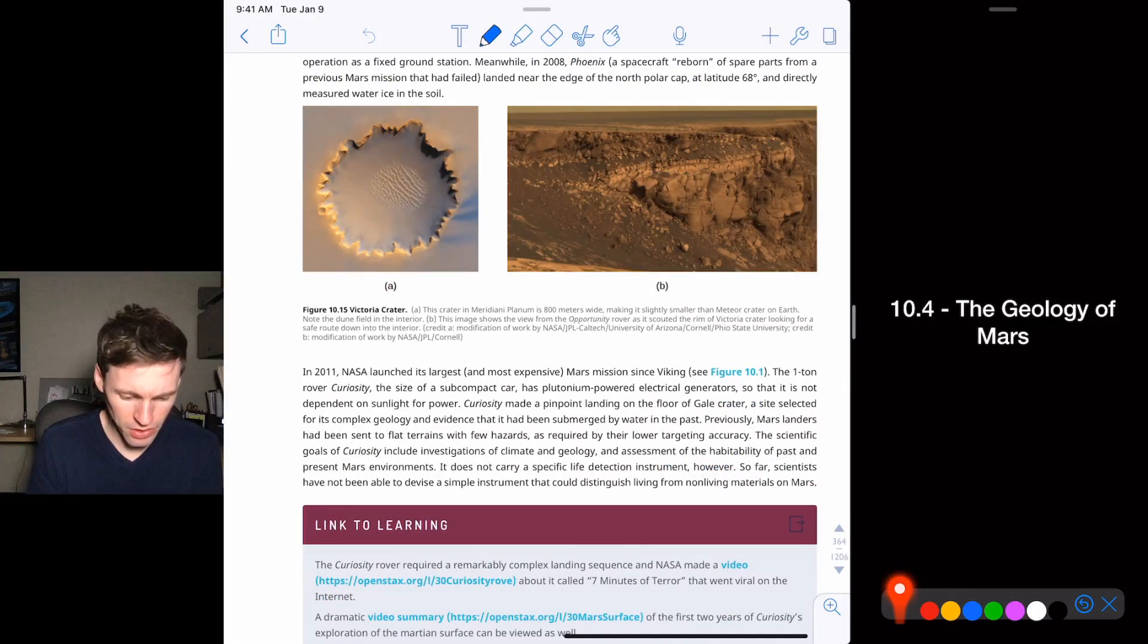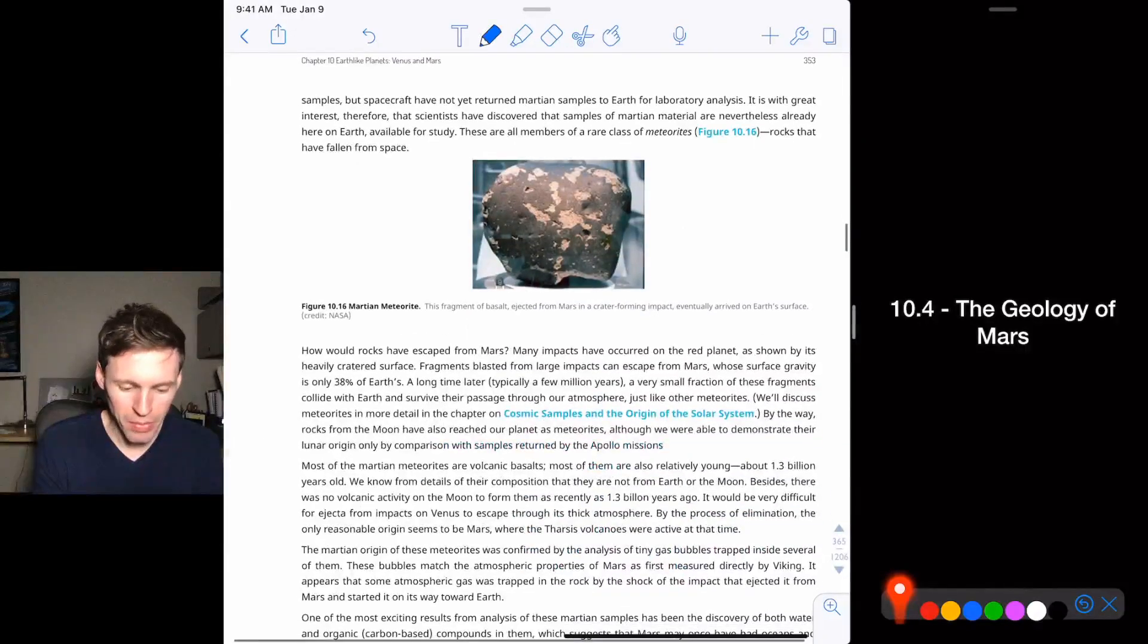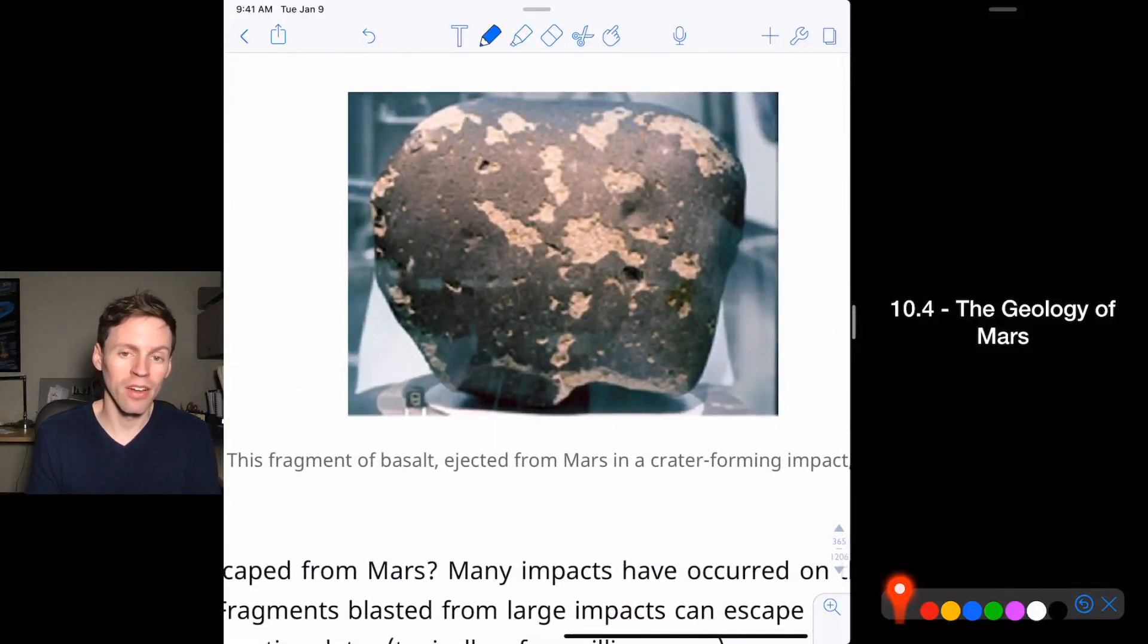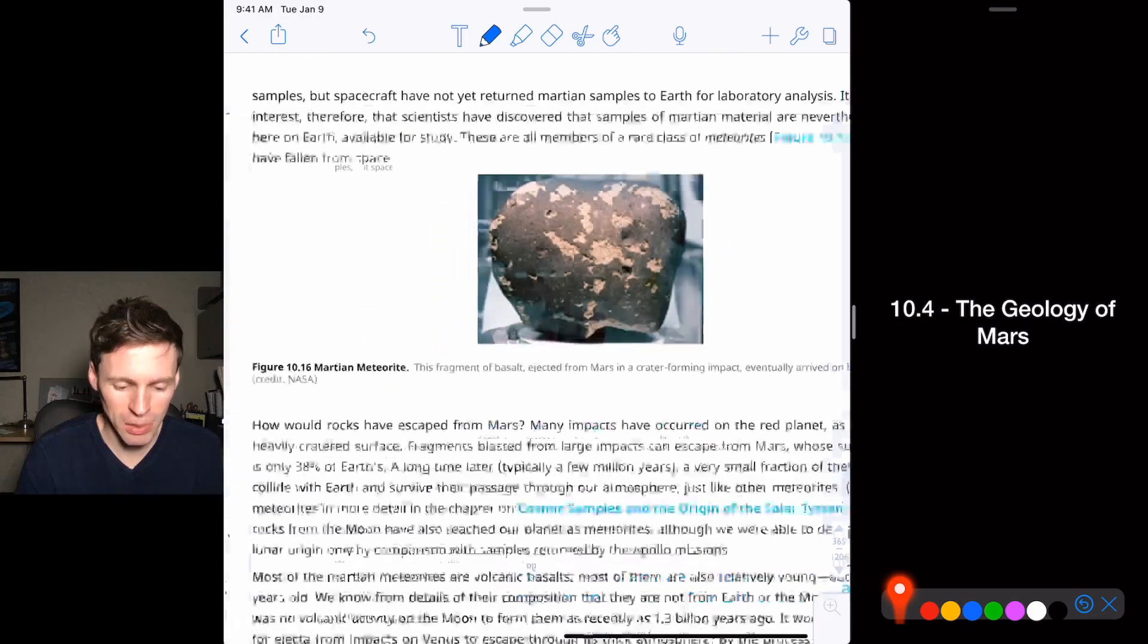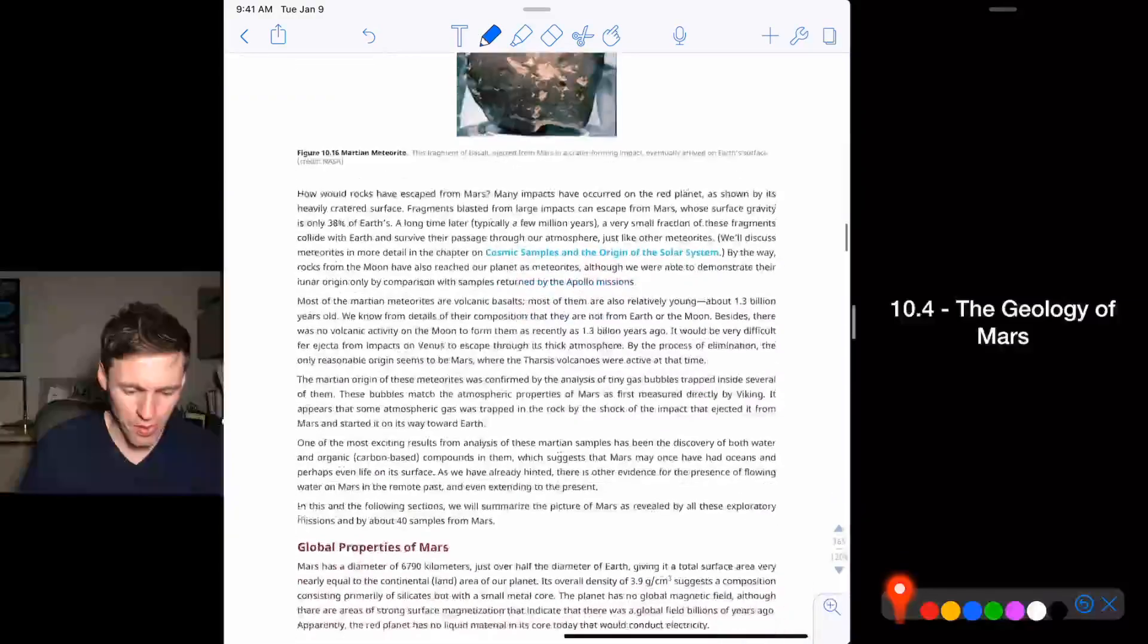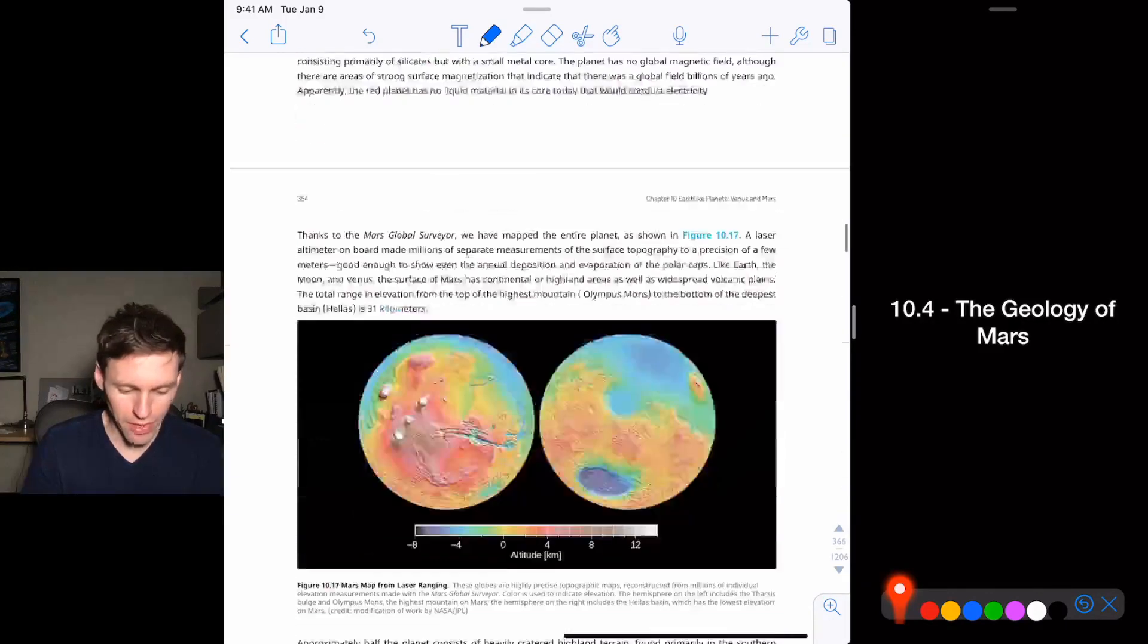This is Victoria crater. This is where the Rover opportunity was at the rim of this thing, taking a picture, which is really cool. So meteorites we've found landed on, for example, in Antarctica, when something hits Mars, boom, it can eject rocks out into space. And some of those can end up on earth. That's really rare to happen, but we can definitely find that.